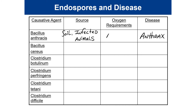Anthrax typically starts as cutaneous anthrax, reflecting its aerobic oxygen requirements. The most deadly form is pulmonary anthrax — woolsorter's disease — where people handling infected sheep hides inhale endospores of Bacillus anthracis into their lungs, which are also aerobic, allowing germination to occur.